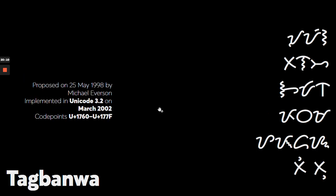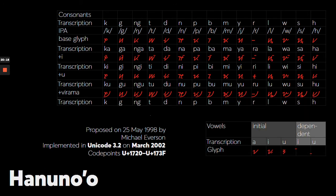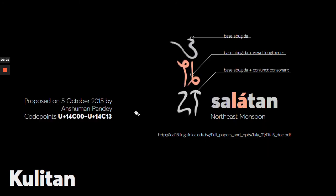For Tagbanwa, they have their own forms. Same with Buhid and Hanunoo. For now, Kulitan is still a pending proposal and has not yet been encoded.